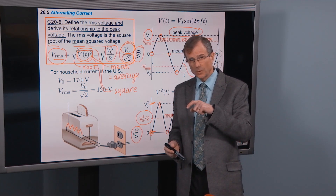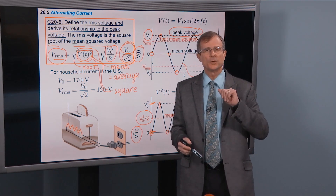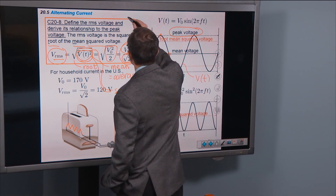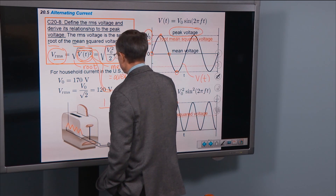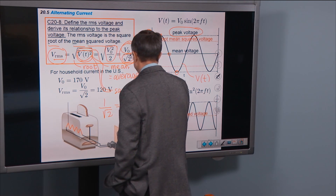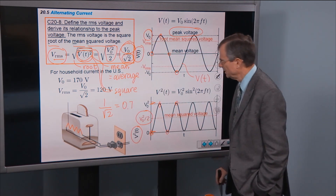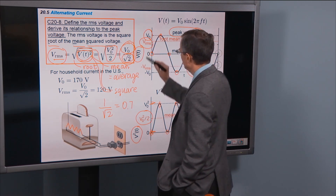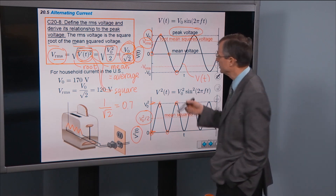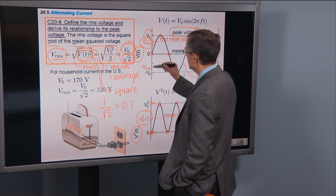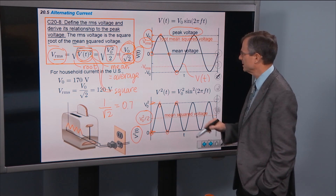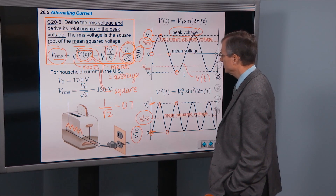The square root of V-naught² is V-naught, and the square root of one-half is 1 over √2. So the root mean square voltage is V-naught divided by √2, which is the peak voltage times approximately 0.7 — about two-thirds of the peak voltage.